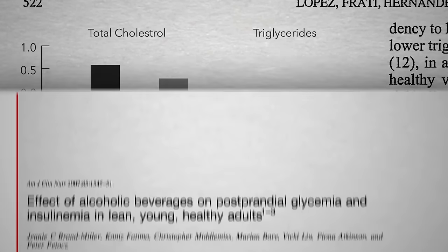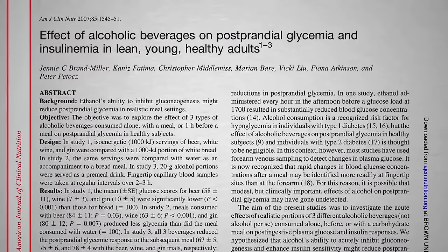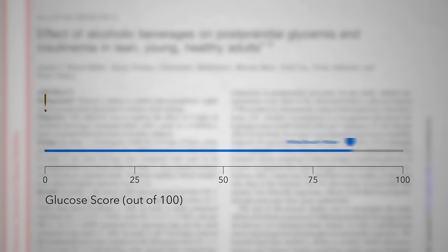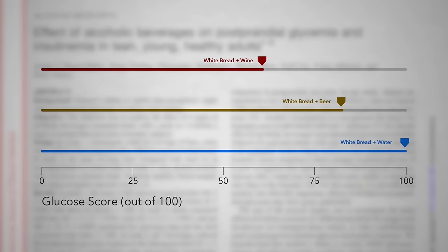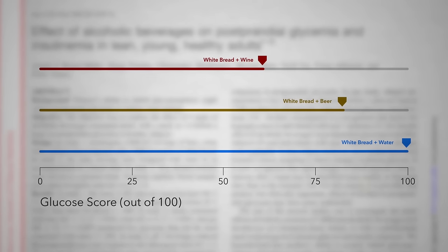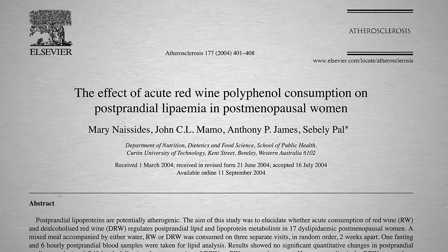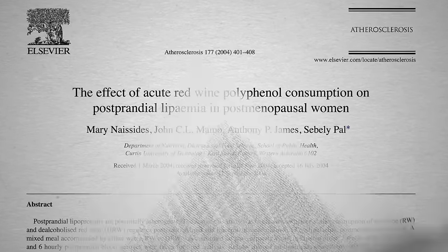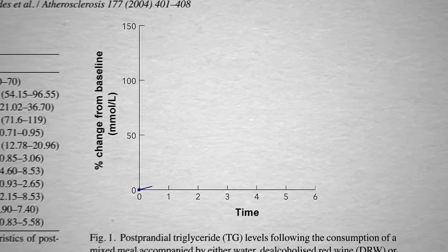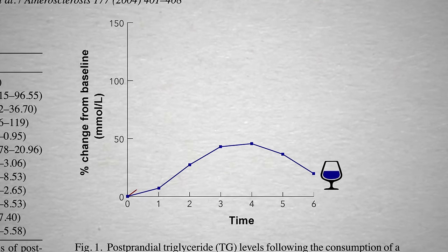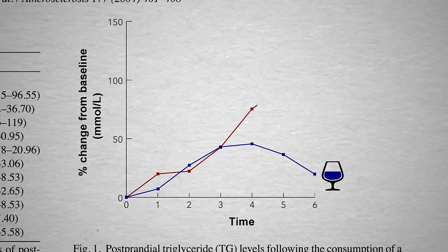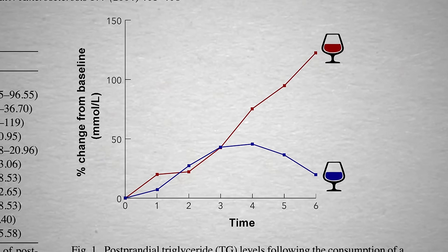If eating berries with a meal decreases inflammation, what about drinking berries? Sipping wine with your white bread significantly blunts the blood sugar spike from the bread, but the alcohol increases the fat in the blood by about the same amount. If you eat some cheese and crackers, this is the triglyceride bump you get. If you sip some wine with the same snack, they shoot through the roof.